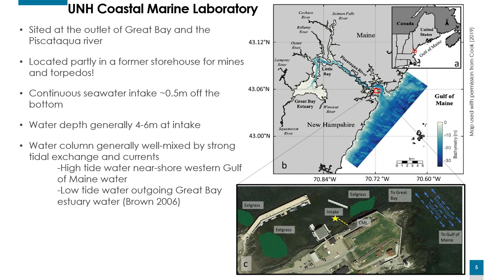The Marine Lab has a continuous seawater intake located about half a meter off the bottom, pumped all the time. There's lots of other experiments going on there — lobsters, lumpfish, mussels — and we just run the monitoring system. The water depth at the intake is generally four to six meters depending on the tide, and the water column is generally really well mixed because tidal exchange and currents are so strong. At high tide, the water is comprised mostly of near-shore western Gulf of Maine water, whereas on the outgoing low tide it's a mixture of Great Bay estuary water.